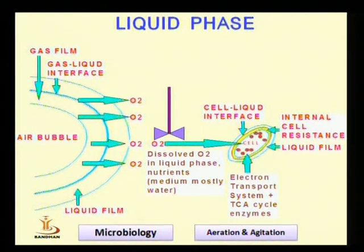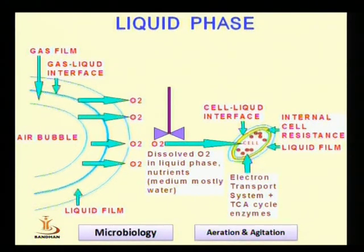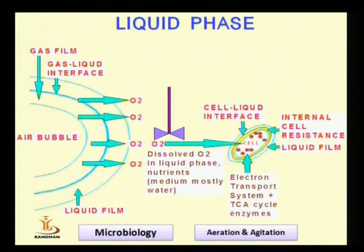We will now have an overview of the process where oxygen is transferred from the air bubble to the surface of the cell. You can see in the figure that the air stream is broken up into air bubbles, which serve as a source of oxygen. Around the boundary interface of the air bubble and liquid medium, two films form — a gas film on the inside of the boundary and a liquid film on the outside.